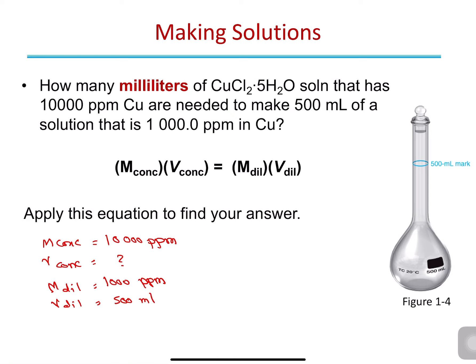Applying the equation, V_concentrated equals M_diluted times V_diluted divided by M_concentrated, which is 1,000 times 500 divided by 10,000. This gives V_concentrated equals 50 mL. So to make this solution, you take 50 mL of your concentrated stock solution, pour it into your flask, and complete with water to the 500 mL mark. The resulting solution will have a concentration of 1,000 parts per million.